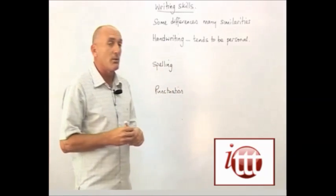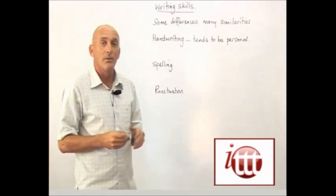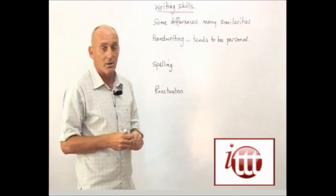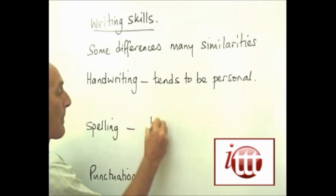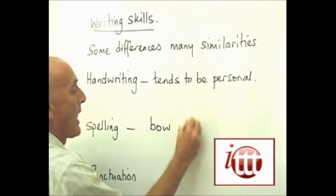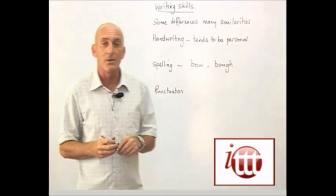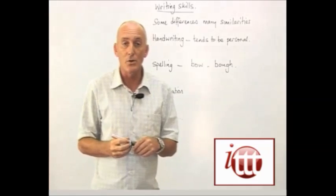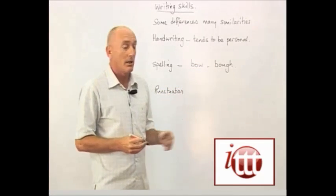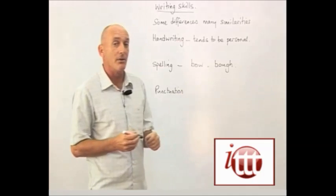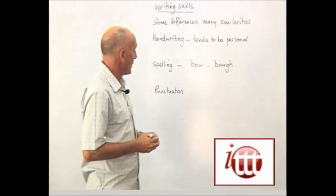Spelling, obviously, with the English language not being phonetic, spelling can often be a problem for all levels of student. If we take a simple example, the spelling differences between two words that actually sound the same — bow and bow — the spelling is completely different. So this can often create problems for our students.